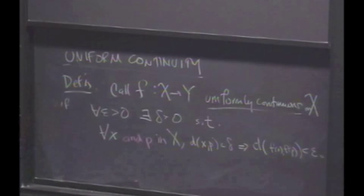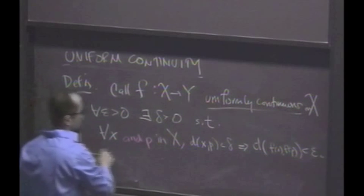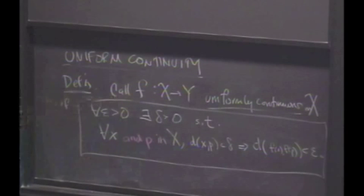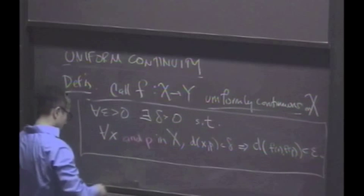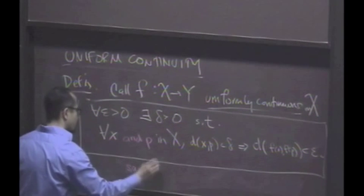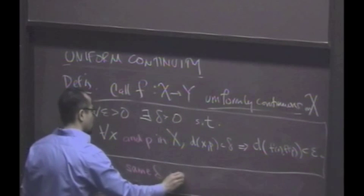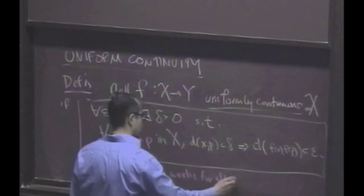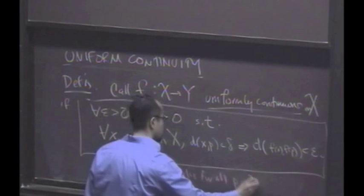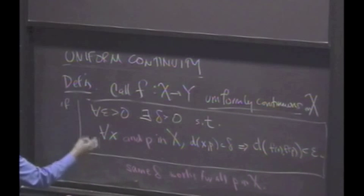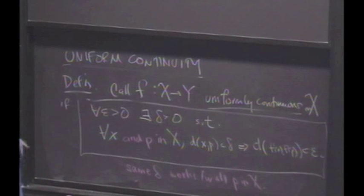So, this looks a lot like the definition of continuity, except that we're saying that the same delta works for every p. You're given epsilon, the same delta works for all p in x. That's what it means to be uniformly continuous on x.